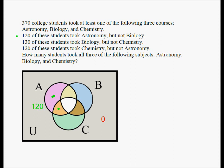Now, you really want to understand that this means 120 students took astronomy but not biology. We are not too concerned about chemistry here. So these are the students in this crescent within A, this crescent within A represents the students who took astronomy but not biology, and that should be 120 according to the question.